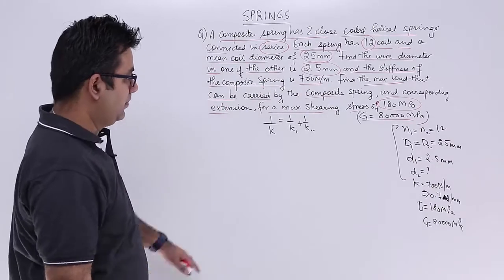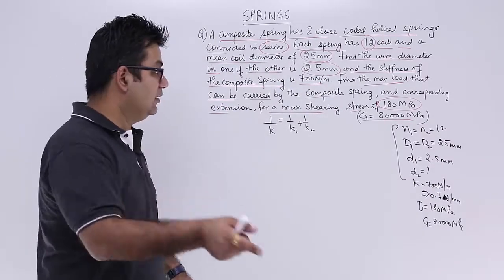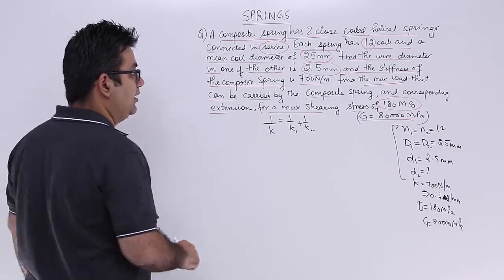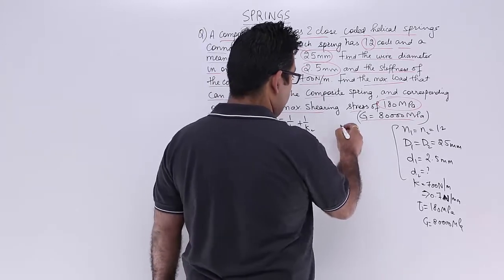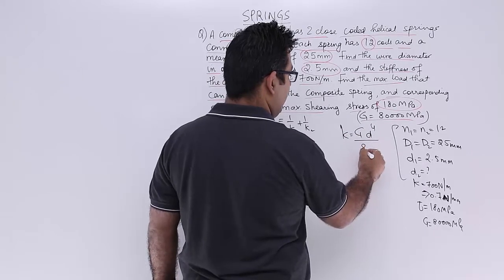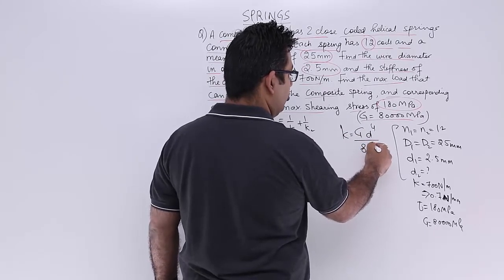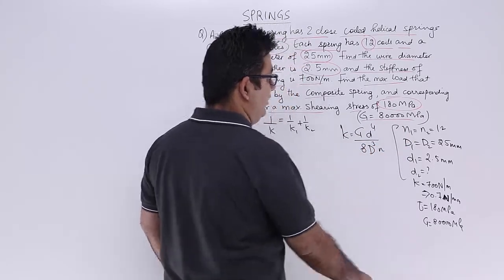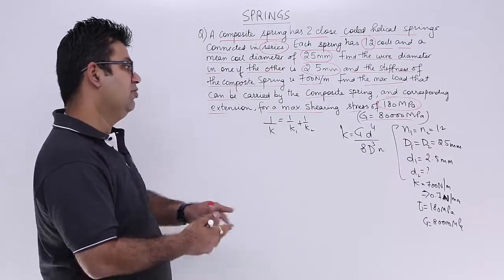So let's have a look at the value of k in terms of these values. The value of k as we know is equal to G times small d to the power 4 upon 8 times capital D cubed by N. So this is the value of k.